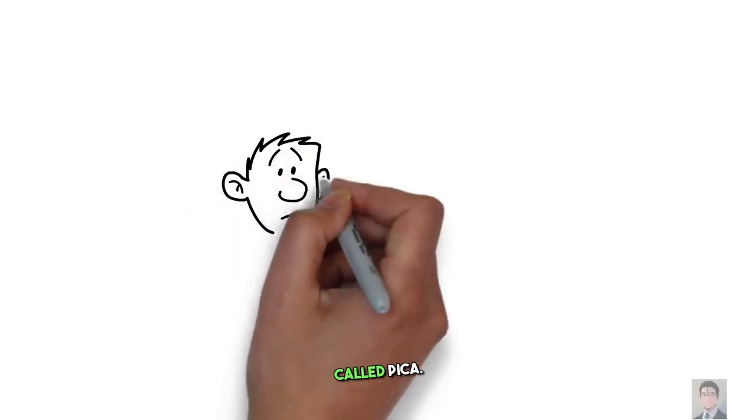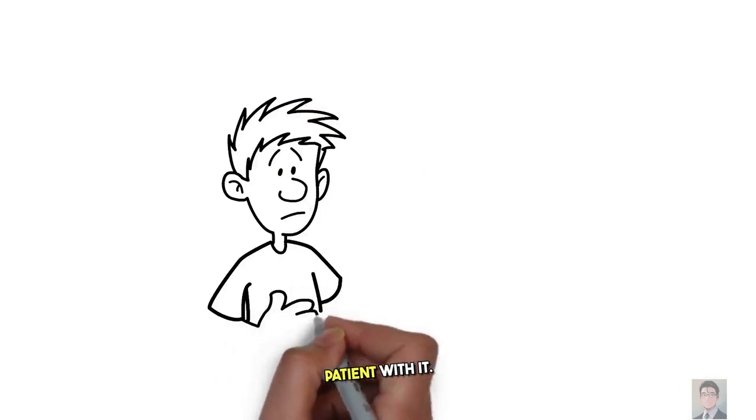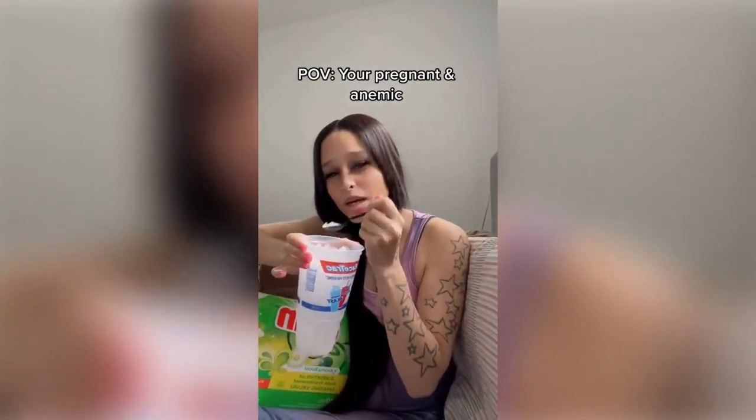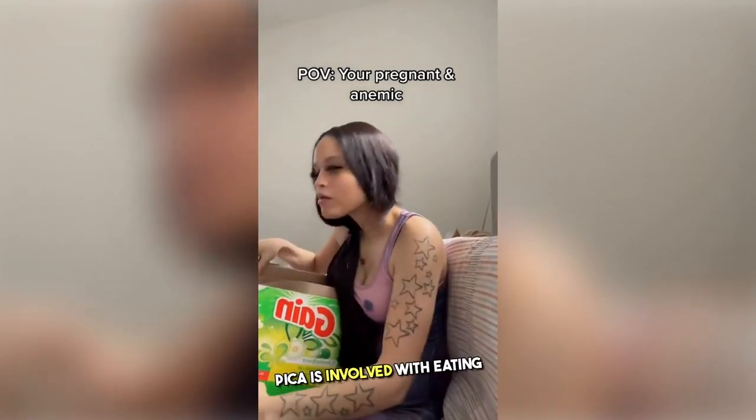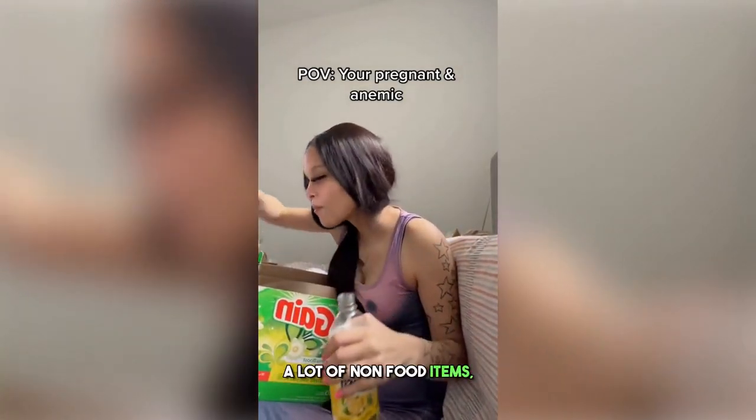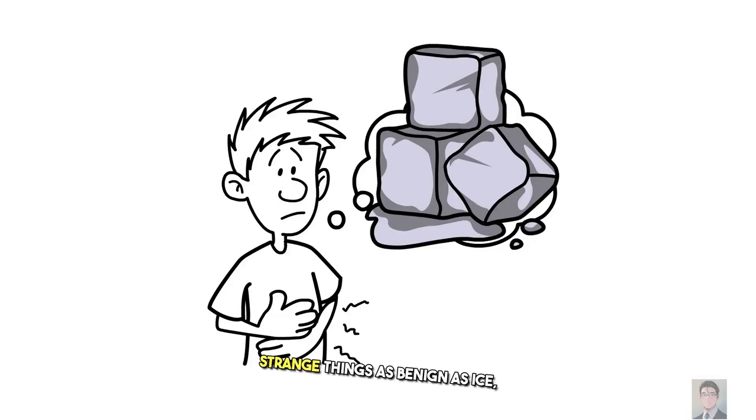Number 6 is a condition called pica. Here's a video of a patient with it. The person in the video was eating a lot of ice. Now pica is involved with eating a lot of non-food items, strange things as benign as ice, and more toxic things like drywall.